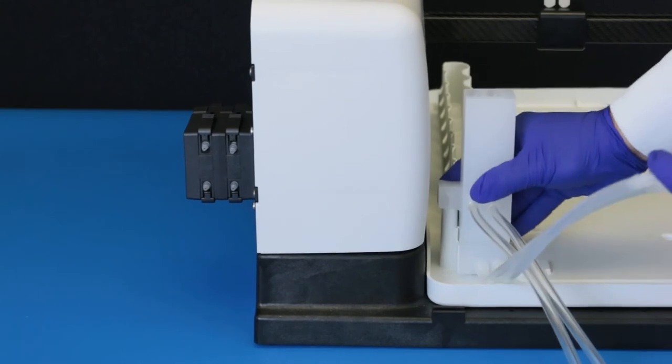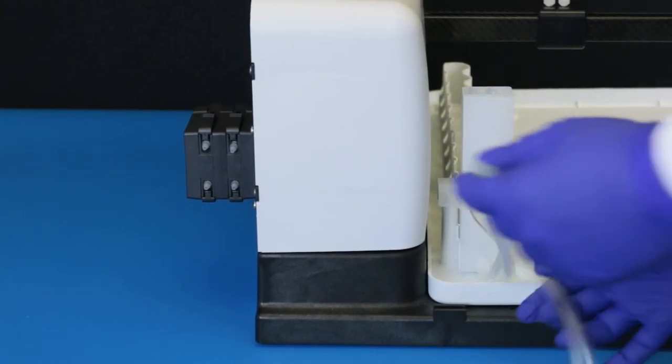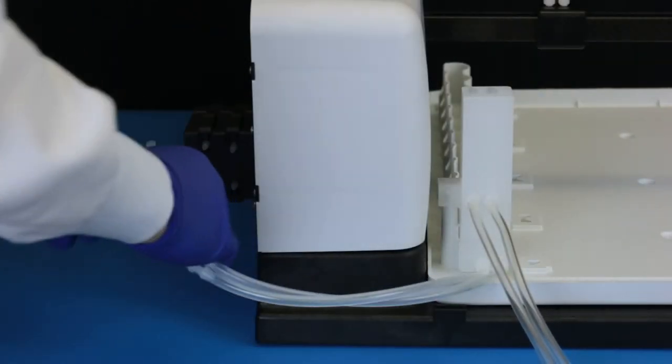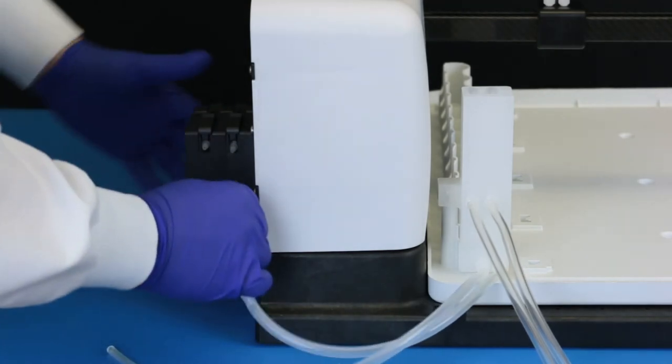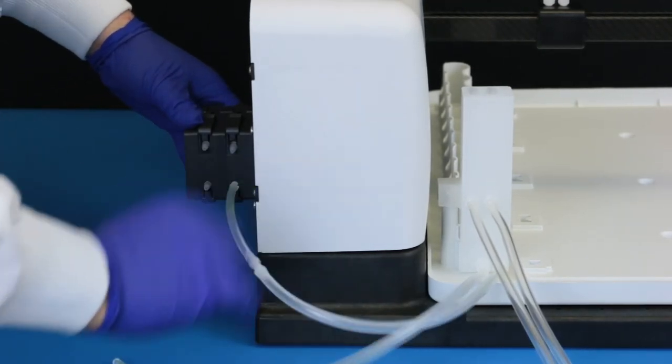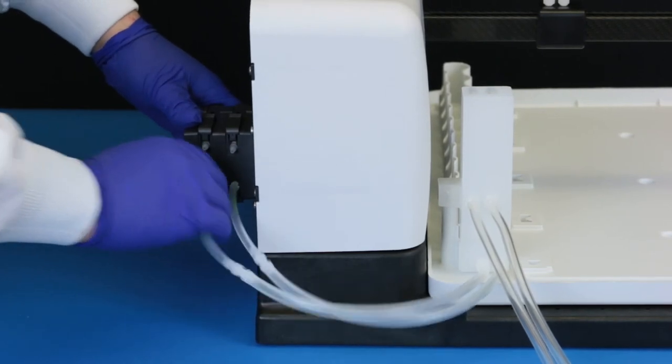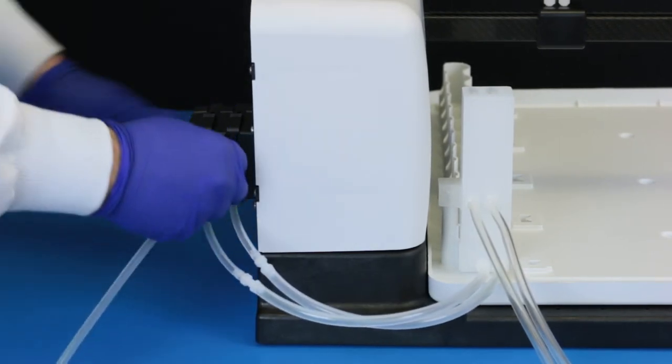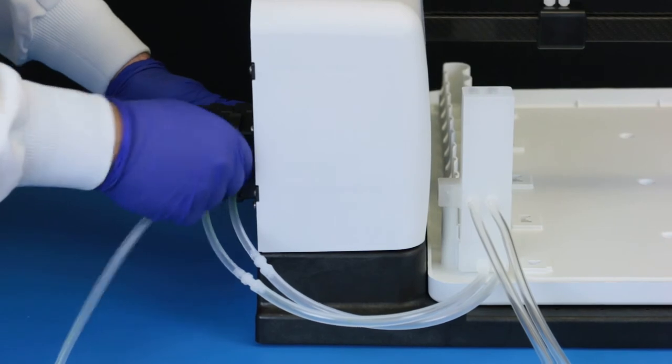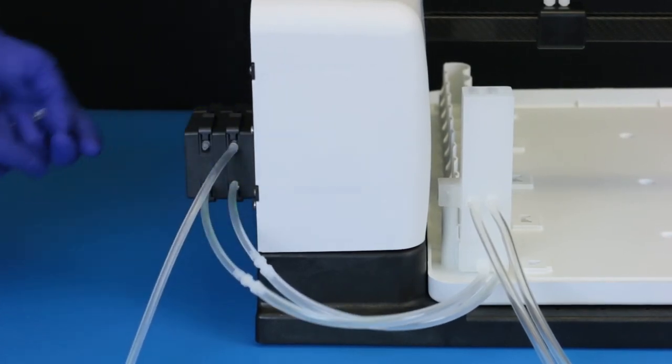If you are using a dual rinse station, plumb and mount it the same way. Connect an inlet tube from the two inlet fittings at the bottom of the rinse station to the fittings at the bottom of the pump. Connect tubes from the bottle of rinse solution to the top of each channel.